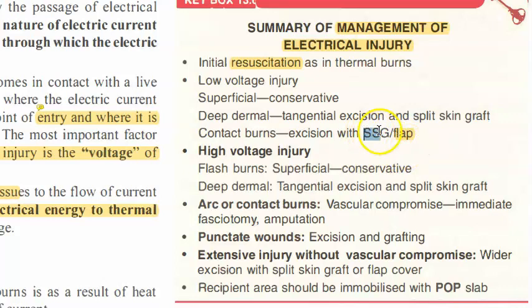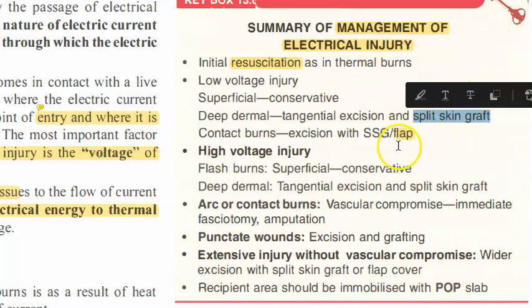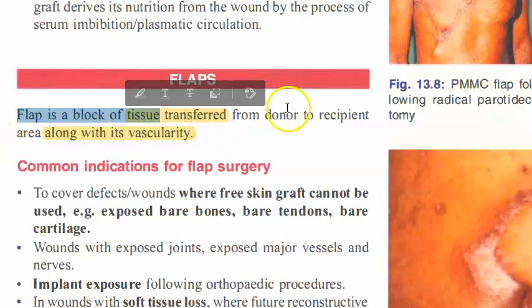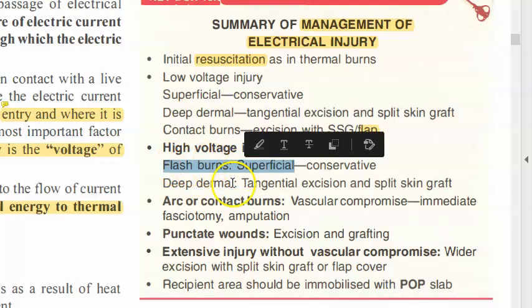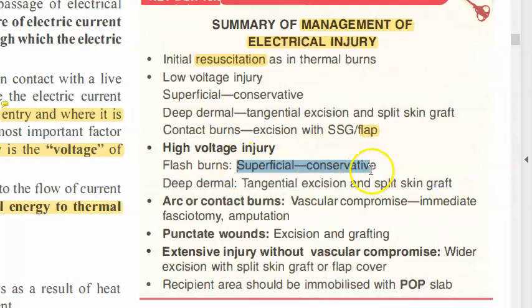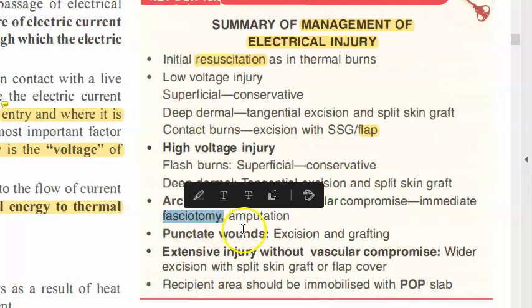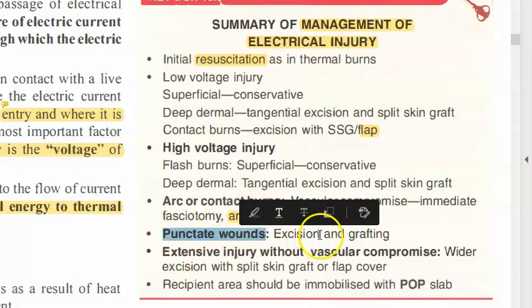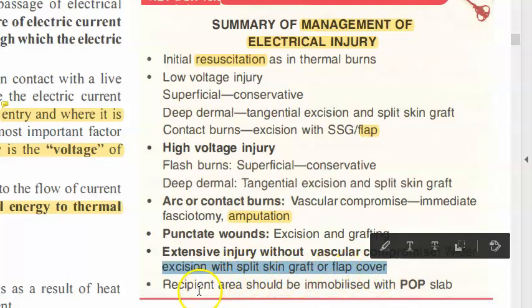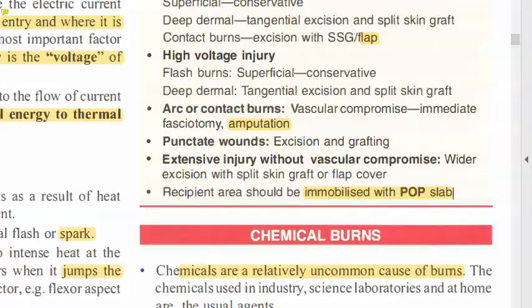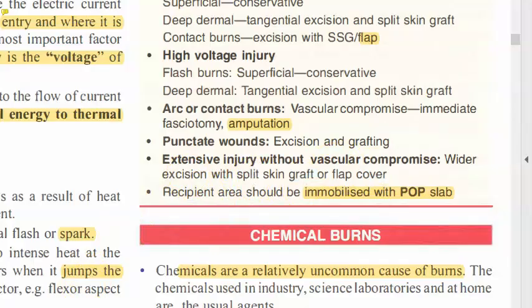Then they perform split skin graft, taking only a few layers of the dermis, or a flap — which is tissue transferred along with its vascularity. For high voltage injury with flash burns or deep dermal burns, again tangential excision and split skin graft are used. For arc burns with vascular compromise, fasciotomy or amputation is performed. For punctate wounds, excision and grafting. For extensive injury without vascular compromise, wider excision with split skin graft or flap is done and the area is immobilized with POP. Key point: vascular compromise → fasciotomy/amputation; no vascular compromise → split skin graft or flap after excision.